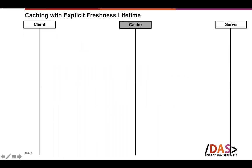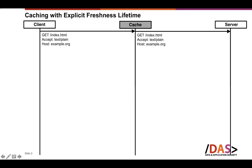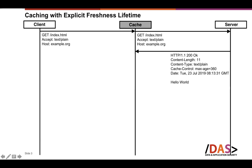I will explain how caching really works. We have two concepts. The first is caching with freshness lifetime: a client sends a request, which goes to the cache, and the cache forwards it to the server. The server replies with a response containing a Cache-Control header field with a max-age value equal to 360. This instructs the cache that it can store this response for the next 360 seconds.